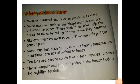The summary of the topic is: muscles contract and relax to enable us to move. Some muscles such as biceps and triceps are attached to bones. The skeletal muscles help the bones to move by pulling on them when they contract. Some muscles such as those in the heart, stomach, and intestines are not attached to bones. Tendons are strong cords that attach muscles to bones. The strongest and the largest tendon in the human body is the Achilles tendon.